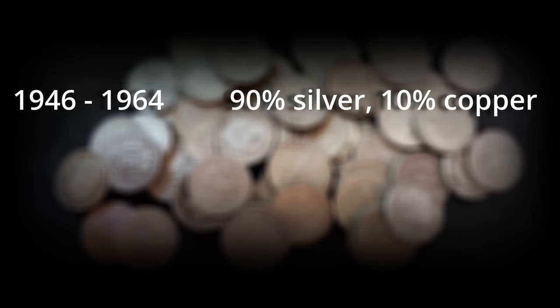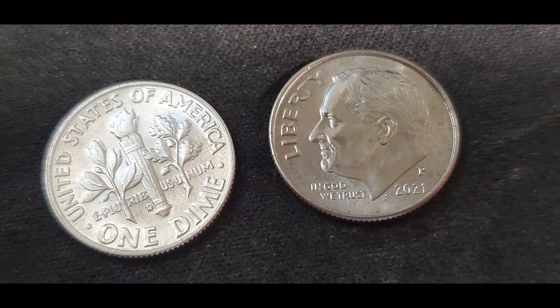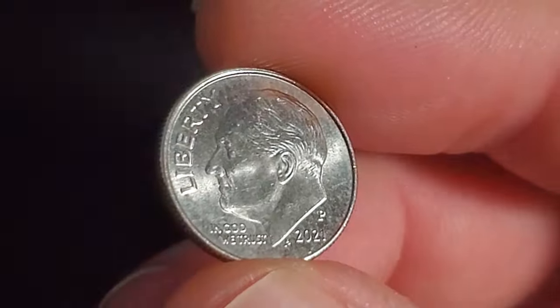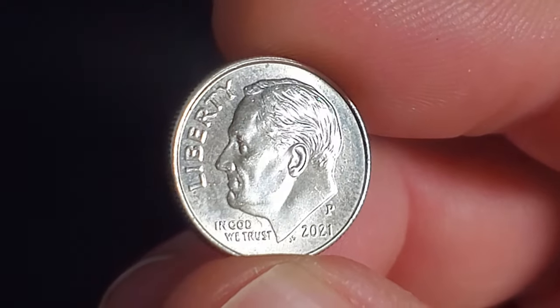From 1946 to 1964, the Roosevelt dime was 90% silver and 10% copper, and from 1965 onwards, it's 91.67% copper and 8.33% nickel. The silver dime has the mint mark to the left of the base of the torch, while the clad coinage has it above the date. Today, you can find these coins still in circulation, with President Roosevelt still smiling at you, just as he has for the last 76 years.